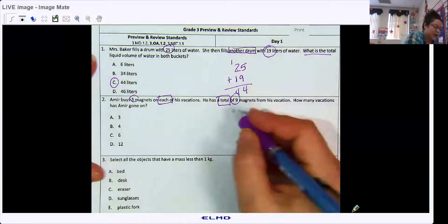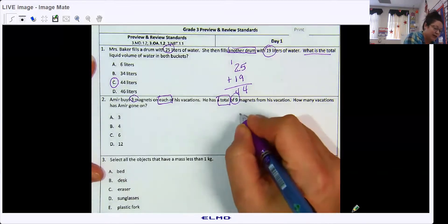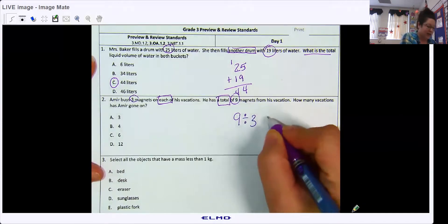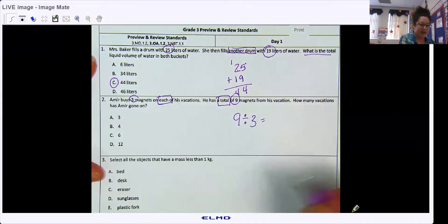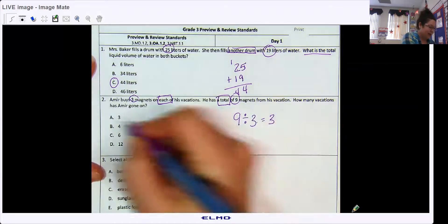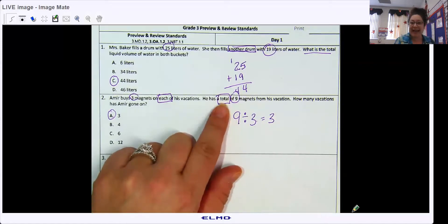He has a total of nine magnets and he buys three at each vacation. So I would take my total of nine divided by three magnets for each vacation, and I get three because three times three is nine. Hopefully that made sense to you. And these questions you have to read carefully. He has a total of nine, so that tells you your number can't get bigger.